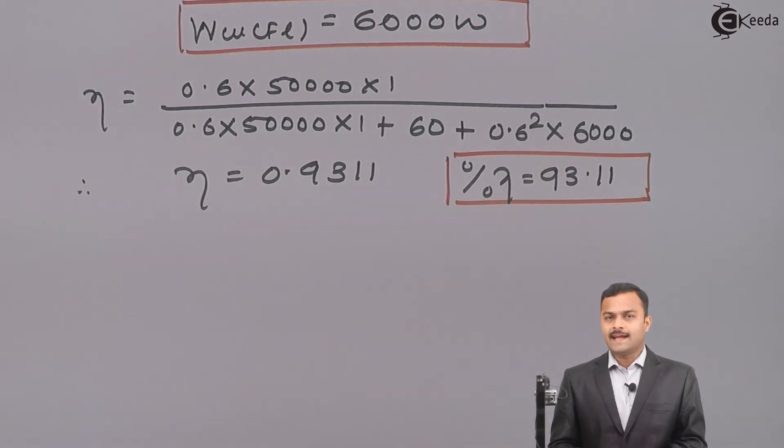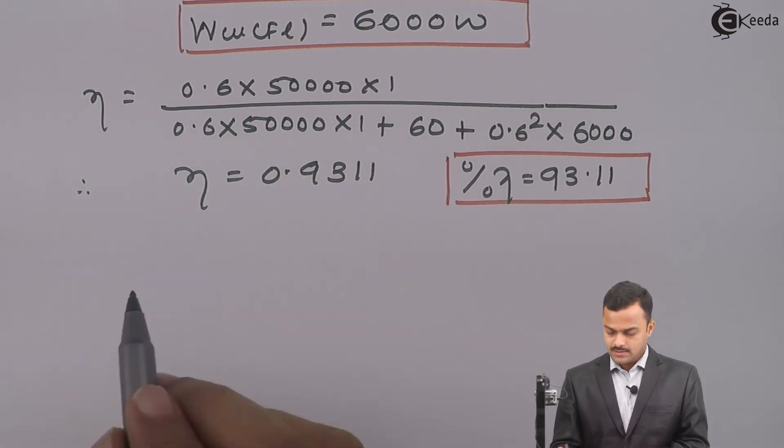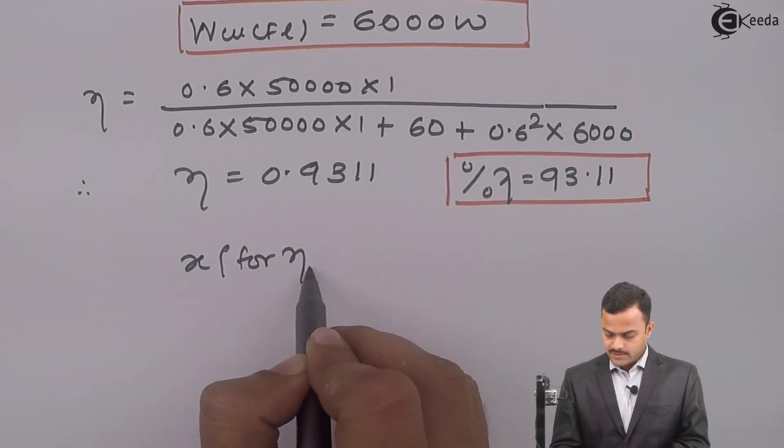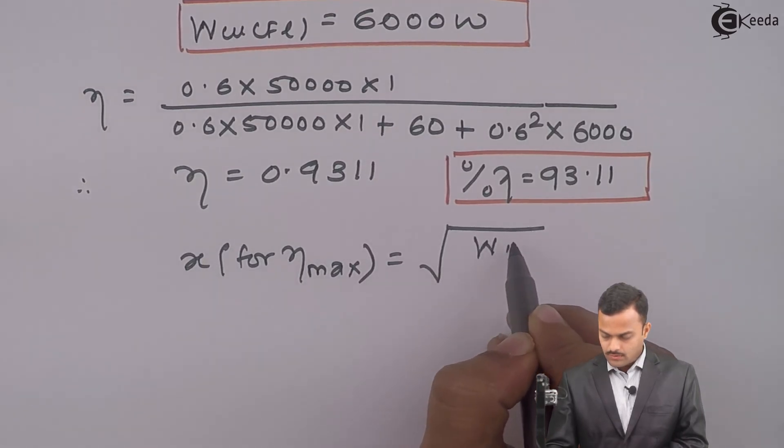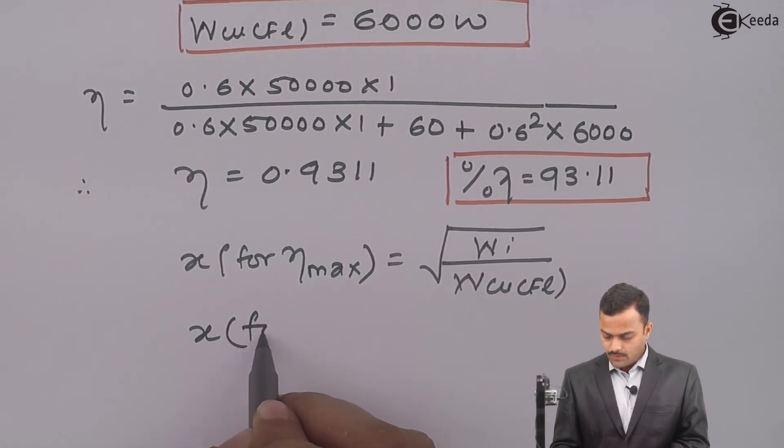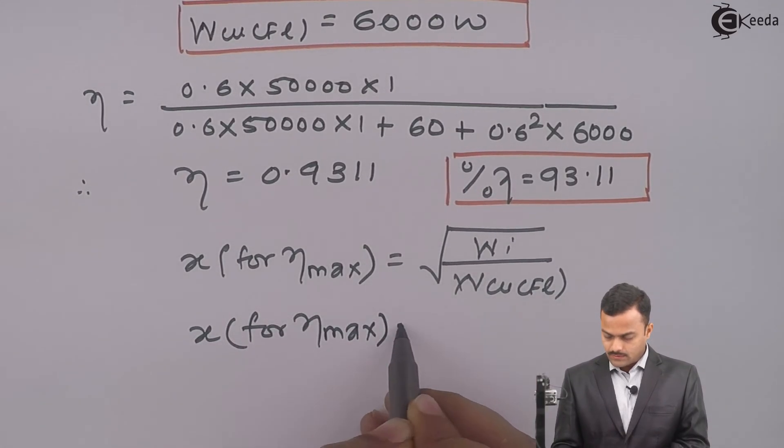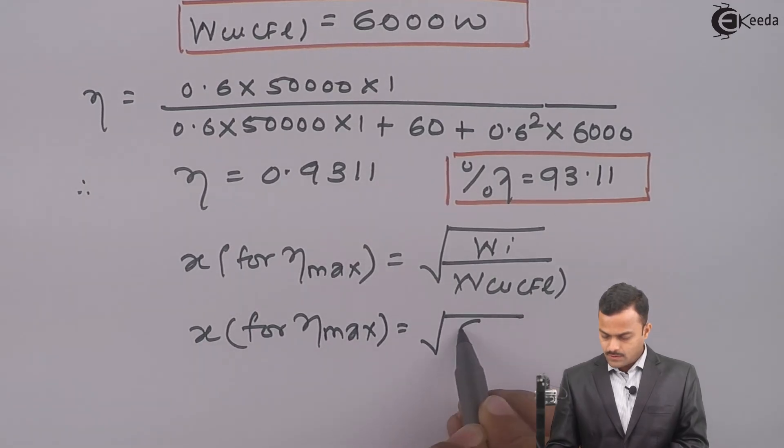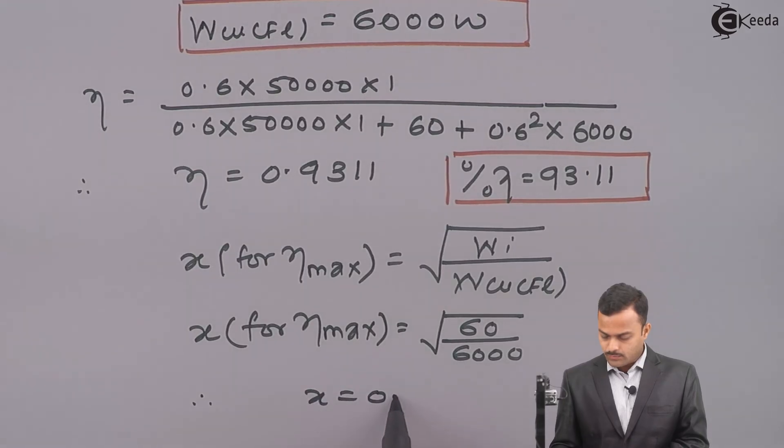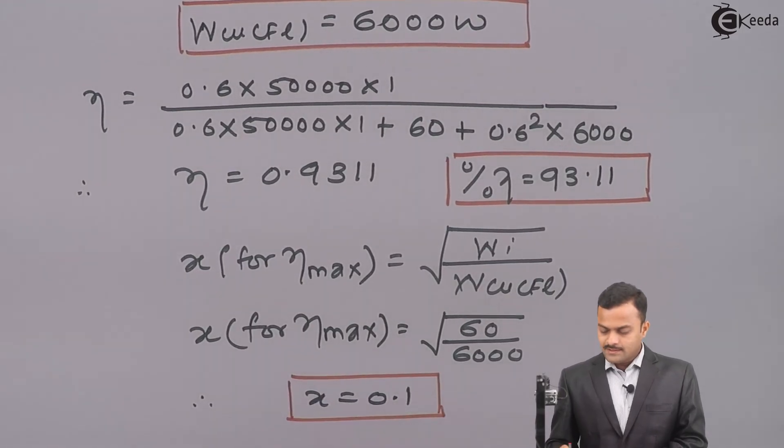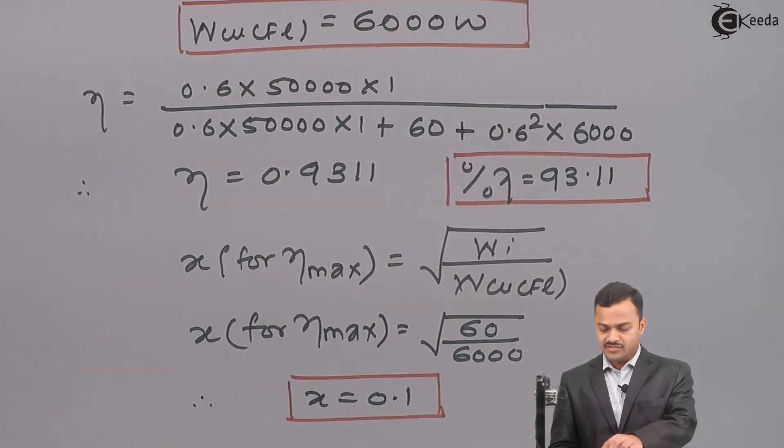Last part is getting maximum efficiency. For maximum efficiency, X is the unknown. X for maximum efficiency equals root of iron loss upon full load copper loss. X equals root of 60 upon 6000, which is 0.1. So 10% of load is required for maximum efficiency.